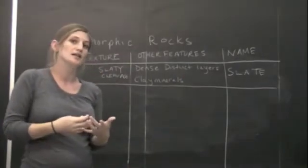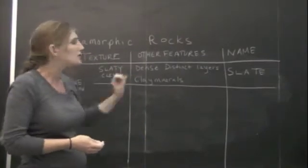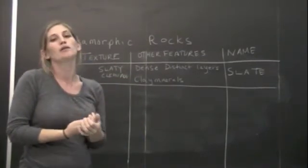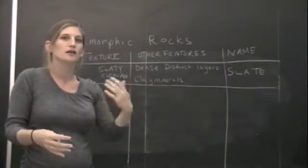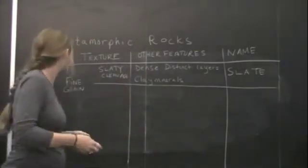If you have a sample, you'll notice that they tend to be in different colors. So you can make the name modified with that color. It might be a black slate, a gray slate, a red slate, etc.